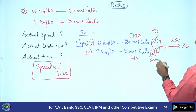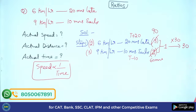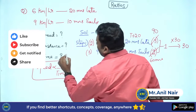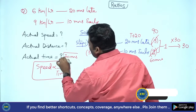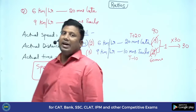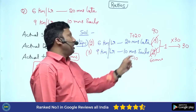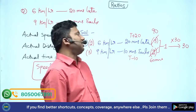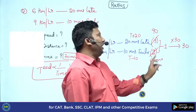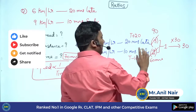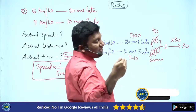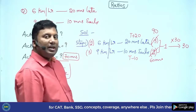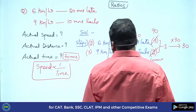Multiplying by 30: 3×30 = 90 minutes and 2×30 = 60 minutes. So t+20 = 90, giving t = 70 minutes; and t−10 = 60, also giving t = 70 minutes. The actual time to travel from source to destination is 70 minutes.